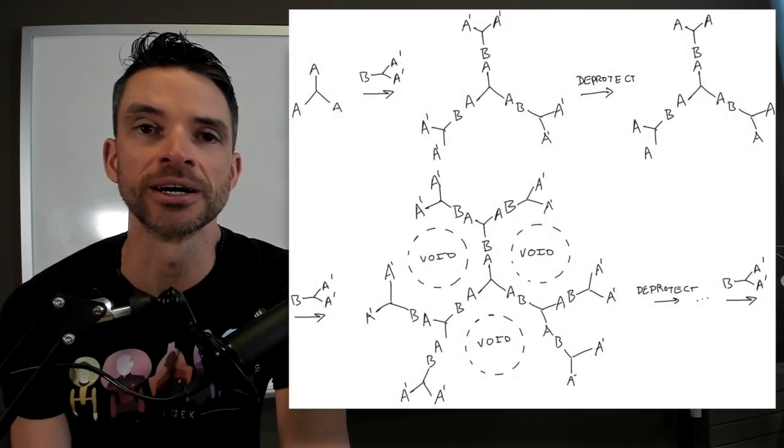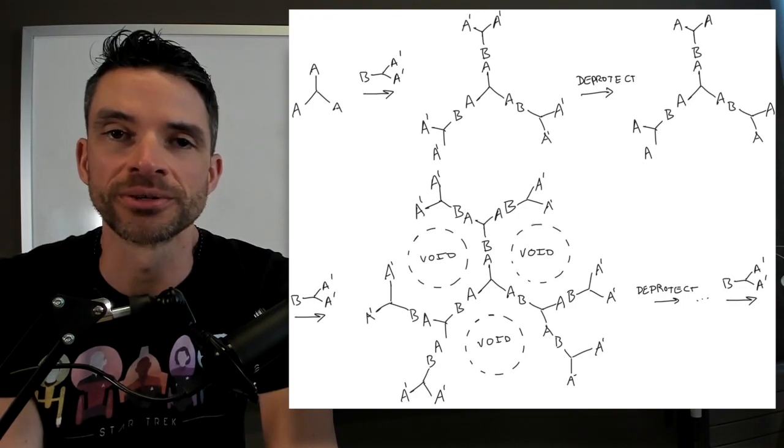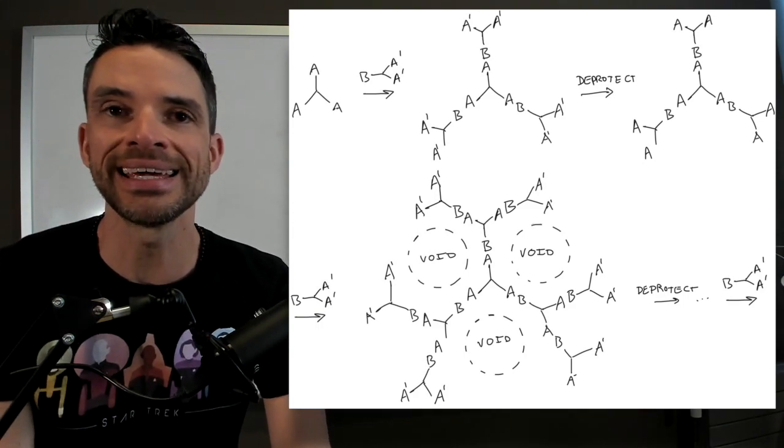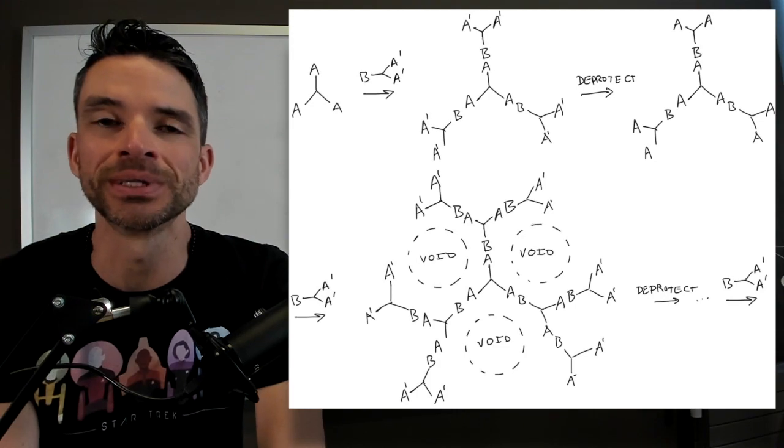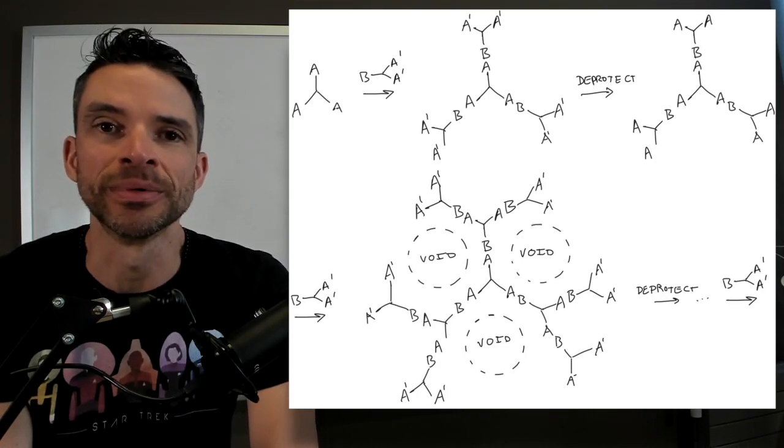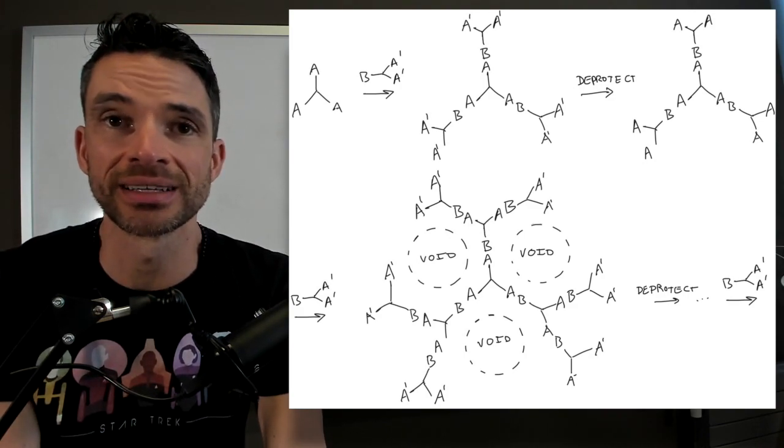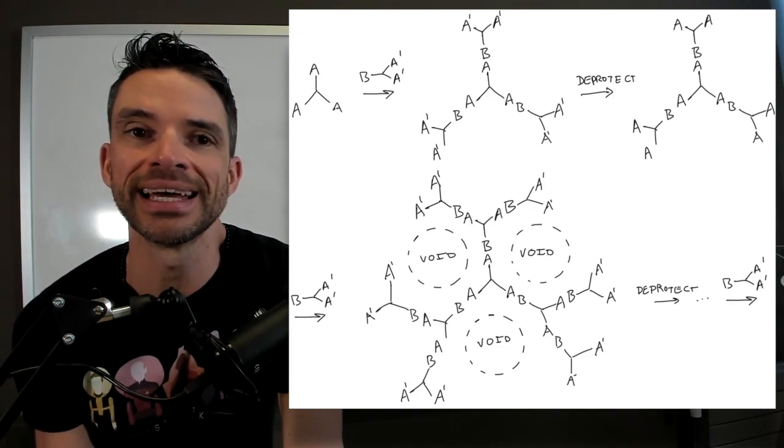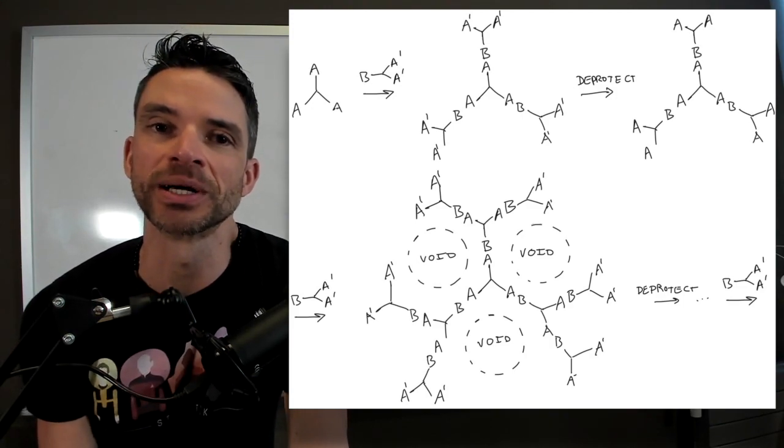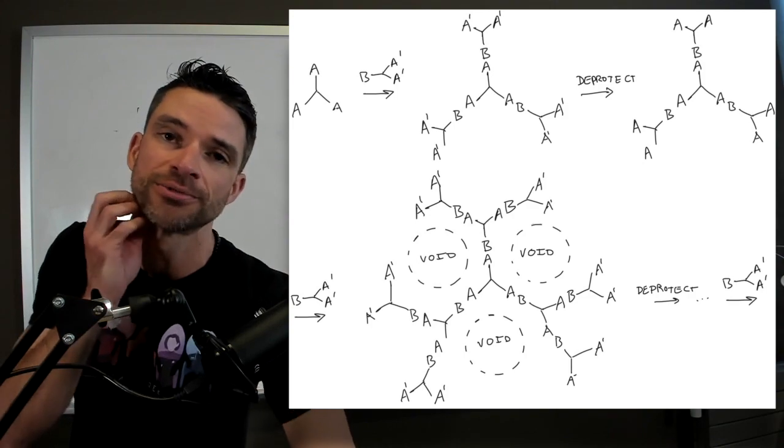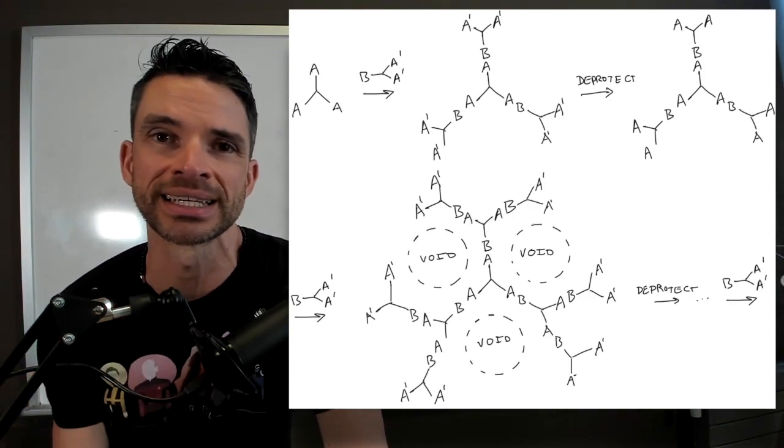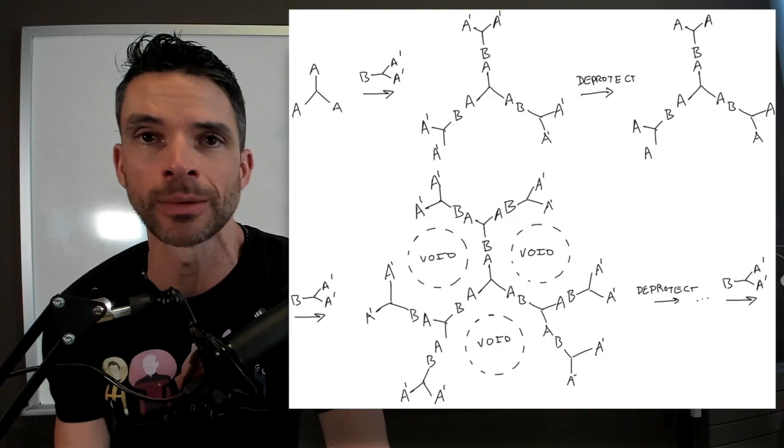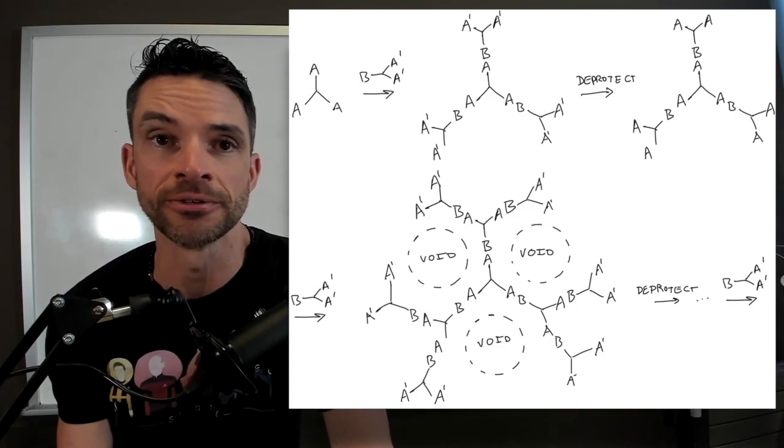Dendromers are examples of branched polymers where you start with, in this case shown here, a three-pronged A-terminated group, then you bond that to these branched B groups where the A groups are protected on this reactant, then you deprotect them, then you react them with another B A prime A prime group, and then you build up the complexity like this. You get this three-dimensional snowflake that kind of reminds me of a spherulite. Nice thing about dendromers is they contain voids where you can encapsulate drug molecules or other types of payloads.